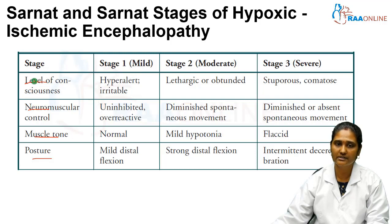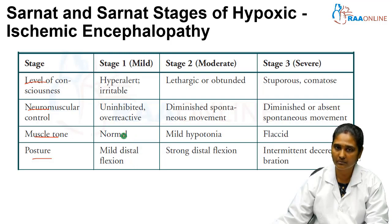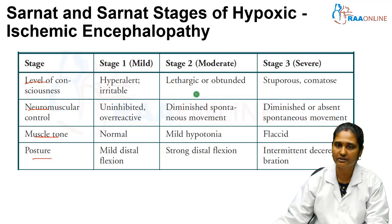In stage 1, the baby will be hyper-alert or irritable with uninhibited or overreactive neuromuscular control. Muscle tone remains normal and there is mild distal flexion, so posture is almost normal. In stage 2, the level of consciousness comes down — the baby would be lethargic or obtunded, with diminished spontaneous movements, mild hypotonia in muscle tone, and strong distal flexion.